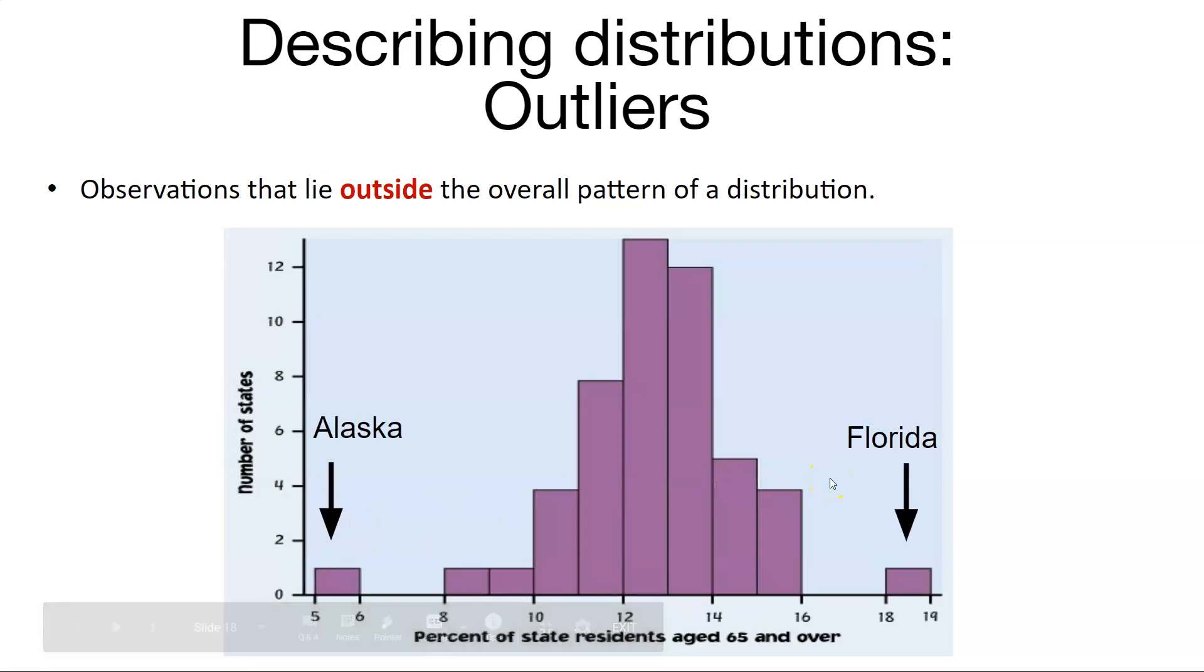But what's going on with these two data points off on the tails of the distribution? Well, we can look at those two and find out that Florida has a higher percentage of state residents that are over 65 compared to the distribution. And Alaska has very few residents relative to the total percentage of people living in that state. And so we can begin to identify these as potential outliers. And we have opportunities to actually quantify whether or not those data points are an outlier or not.